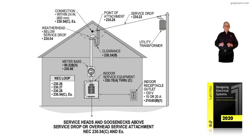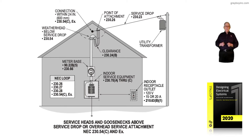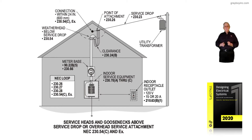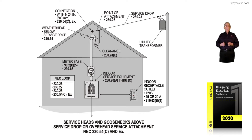This illustration deals with service heads and goosenecks above the service drop, or overhead service at the attachment, in accordance with NEC 230.54C and exception. Basically, this illustration is showing that the weatherhead is going to be located below or next to the point of attachment of the service drop — here it's located above — and notice it is permissible to be connected within 24 inches.